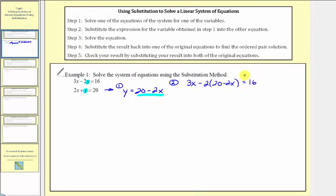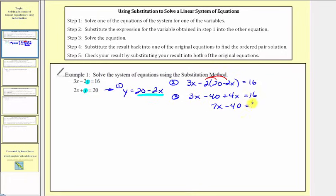Step 3: we want to solve this equation. We would clear the parentheses by distributing. Because of the subtraction, we would distribute negative 2. So step 3, we'd have 3x minus 40 plus 4x equals 16. Combining like terms, 3x plus 4x is 7x. Adding 40 to both sides, we'd have 7x equals 56. Dividing both sides by 7, we have x equals 8, since 56 divided by 7 equals 8.